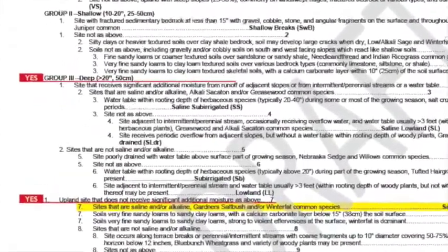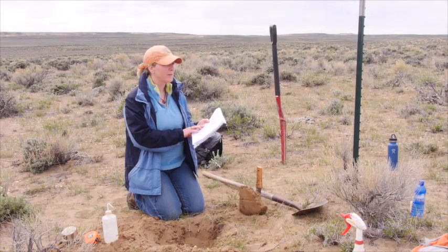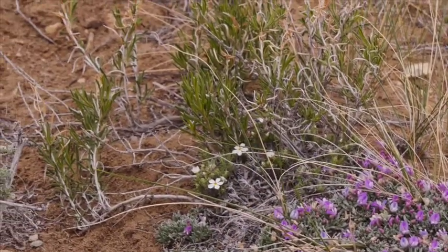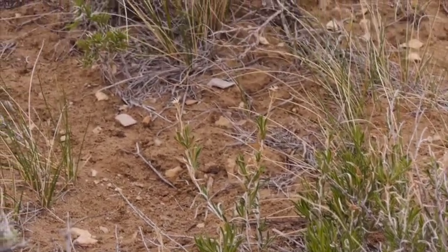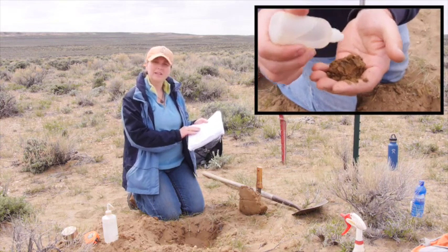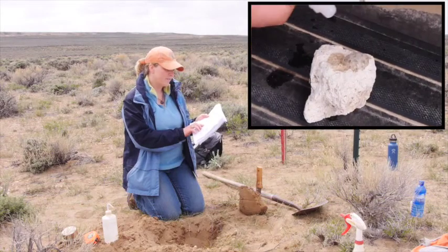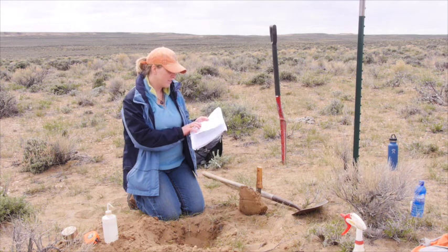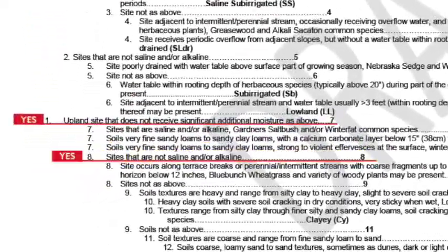The next set of questions asks about chemistry — whether the site is saline or alkaline. One major way to determine that is to look for indicator plants that would signal the presence of salts, and we really don't have those plants on this site. We also tested for carbonates and found none, so we can't answer yes to the questions about calcium carbonate layers or strong effervescence at the surface. Our last option is that the soils are not saline or alkaline, and that is what we're answering yes to.